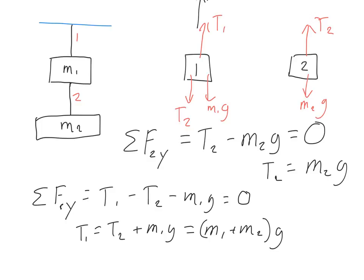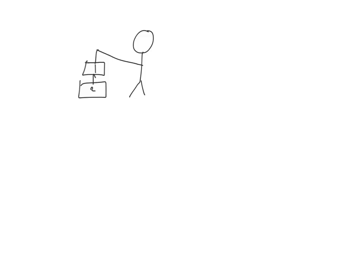Alright, then what if we wanted to complicate things a little bit? In this scenario, instead of hanging the masses up, I'm going to hold them, and I'm going to lift up all these masses and accelerate them upward. I'm working my muscles, and let's say I give an acceleration to this system of 1 meter per second squared. So, at this instant we can look at the tension here.